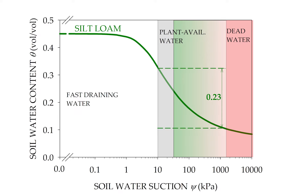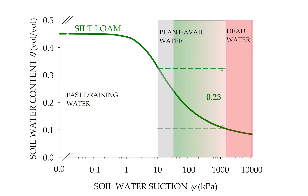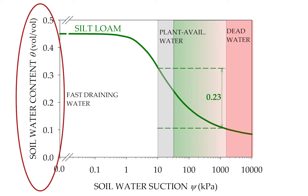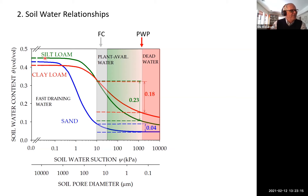Now we want to go into soil water relationships. Many of you have probably heard of one very important soil water characteristic: the soil water retention curve, or water release characteristic. On the x-axis, we have the energy status of soil water suction — you measure suction values with tensiometers or watermark meters. On the y-axis, we have volumetric soil water content in cubic inch per cubic inch, or volume per volume units. I've plotted this for three different soil types from the literature: a silt loam, a clay loam, and a sand soil, showing how the relationship between soil water content and energy status looks.